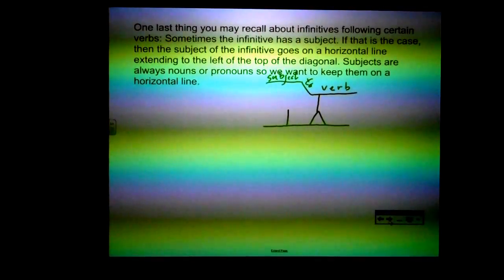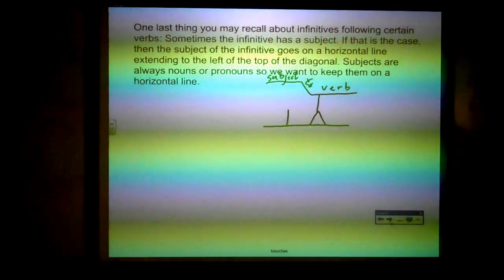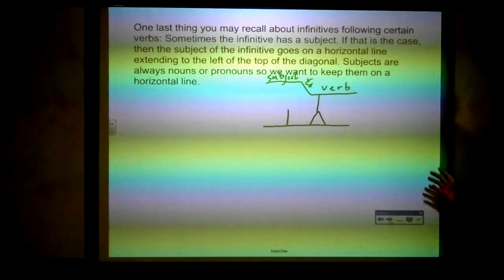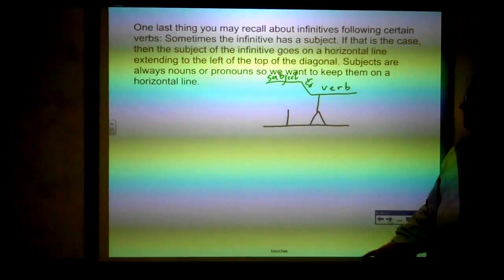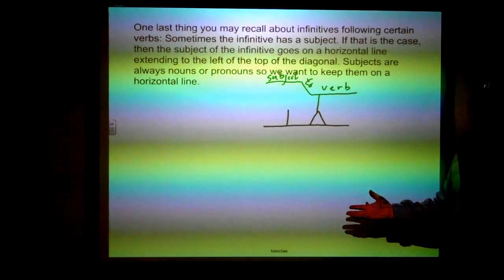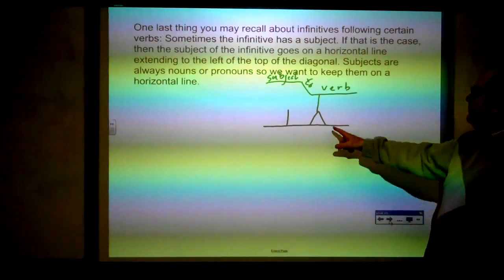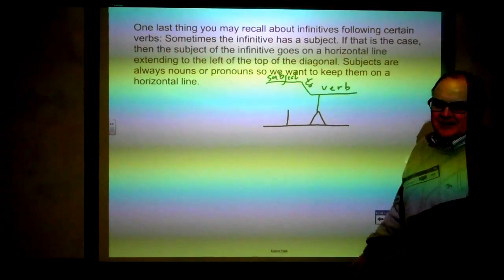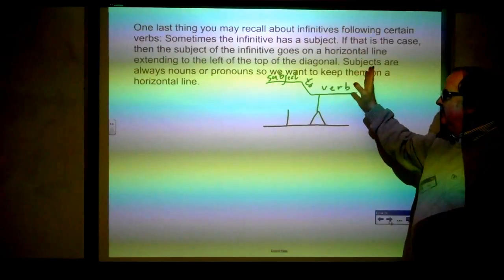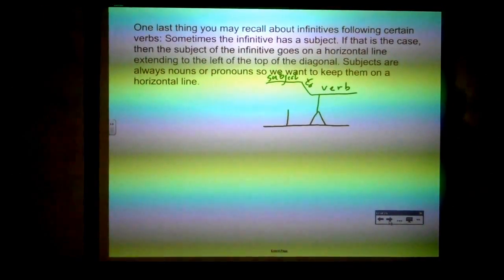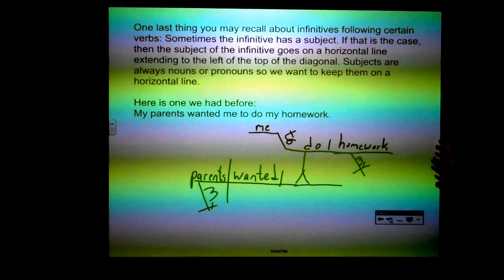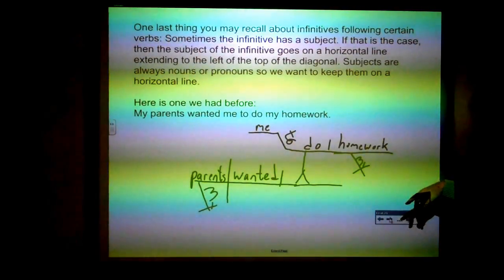One last thing: sometimes the infinitive has a subject. If that's the case, the subject of the infinitive goes on a horizontal line extending to the left of the top of the diagonal. Since subjects are always nouns or pronouns, you want to keep them on a horizontal line. Normally, if you have a subject of an infinitive, that infinitive is probably a direct object. So it goes on the noun stand — "to" plus the verb — and then the subject goes to the left of the "to."